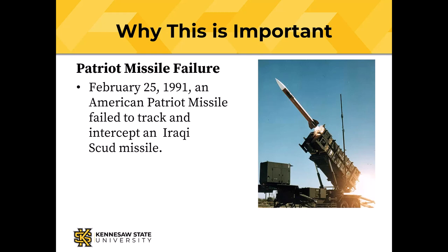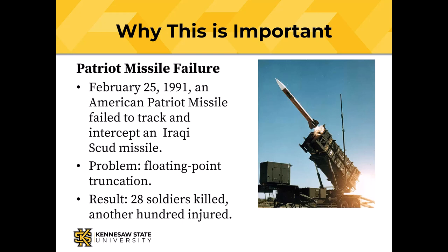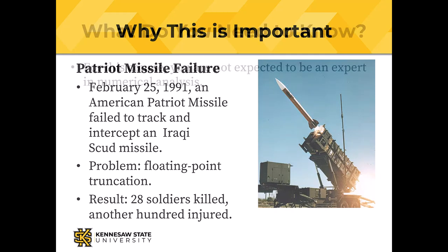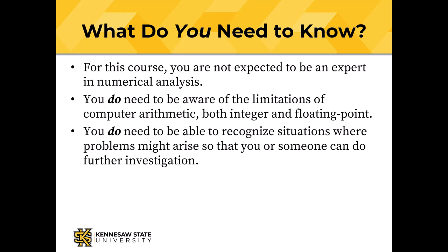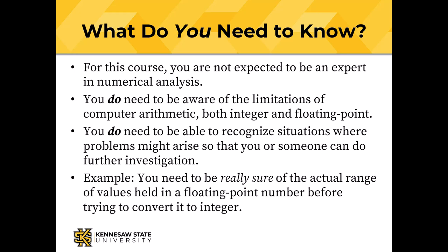Why is this important? There are a number of examples where programming errors caused disasters, and many involved misuse of floating point numbers. In February of 1991, an American Patriot missile failed to track and intercept an Iraqi Scud missile. The problem was floating point truncation — the floating point number wasn't big enough. The result: 28 American soldiers were killed and another 100 were injured. For this course, you're not expected to be an expert in numerical analysis, but you do need to be aware of the limitations of computer arithmetic with both integers and floating point numbers, and recognize situations where problems might arise. For example, you need to be sure of the actual range of values in a floating point number before converting it to integer. In the 1980s, the Therac-25 radiation therapy machine killed several patients and permanently injured others due to incorrect conversion of floating point to integer.